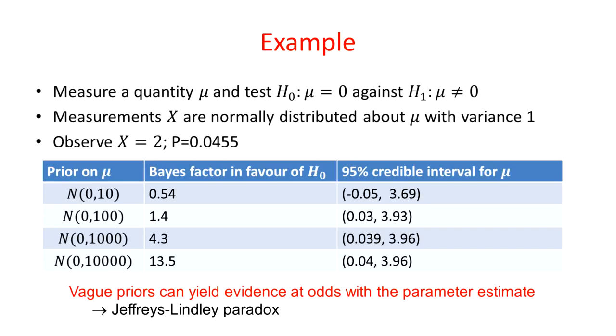If we calculate Bayes' factors, then the more vague our prior gets, the more the Bayes' factor favors the null hypothesis that mu is 0. However, the credible interval for mu is quite stable, and it suggests a value that's different from 0.